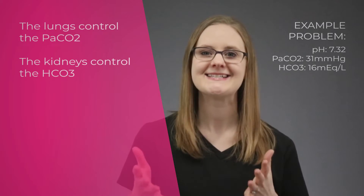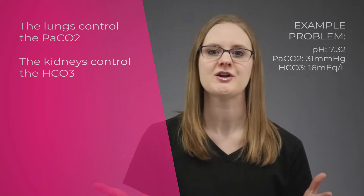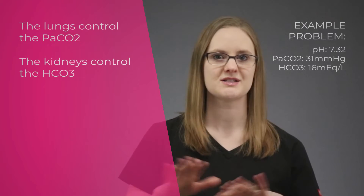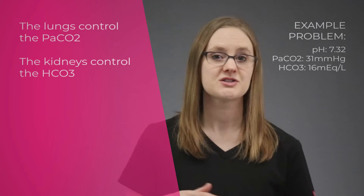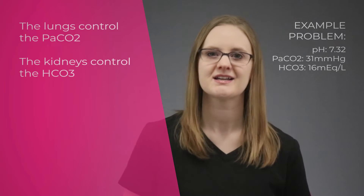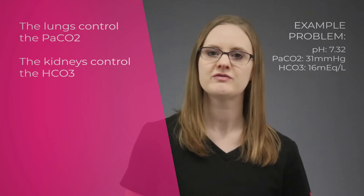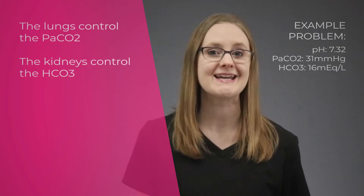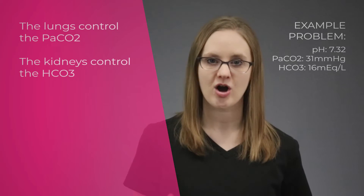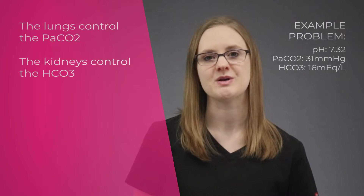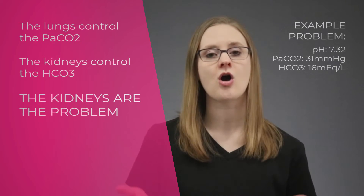Here in this video, we're just going to do a general overview to help you figure out if the ABG is compensated or uncompensated. So in our example, the pH is acidic, but the PaCO2 value is lower than normal, so the lungs are not the problem. Looking at the kidneys, we can see that the HCO3 value is low, so the kidneys are not making enough bicarbonate, which causes the blood to be more acidic. So the kidneys here are the problem.